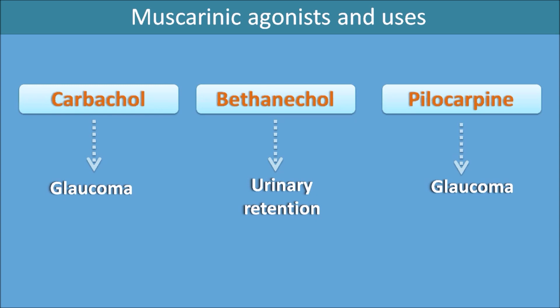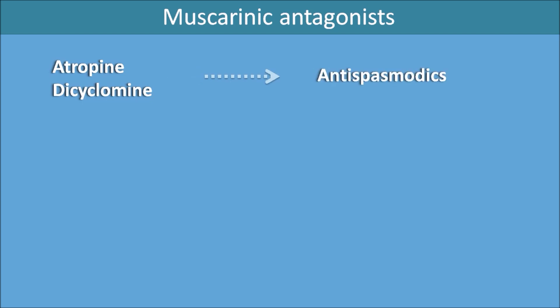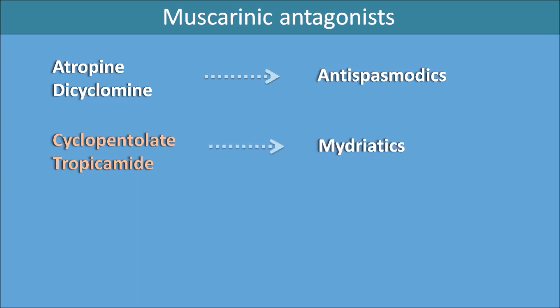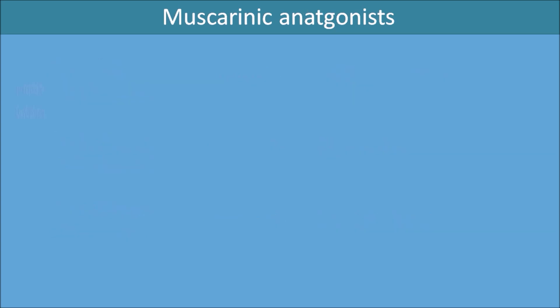Now moving to muscarinic antagonists: drugs like atropine and dicyclomine are mainly used as antispasmodics. Drugs like cyclopentolate and tropicamide are used as mydriatics, which produce pupillary dilatation. Ipratropium and tiotropium are selective for the lungs and produce bronchodilatation, so they are used as bronchodilators particularly in the treatment of COPD — chronic obstructive pulmonary disorder.